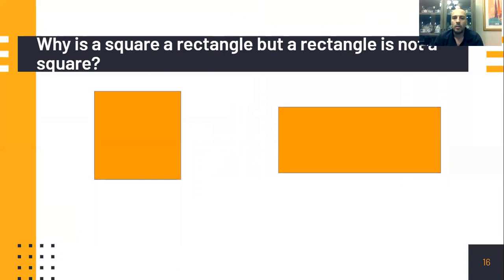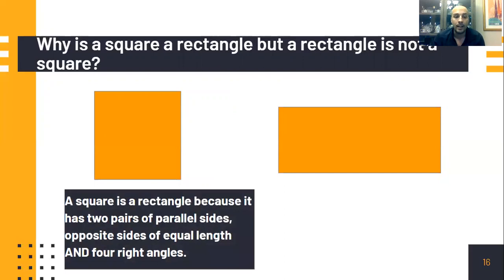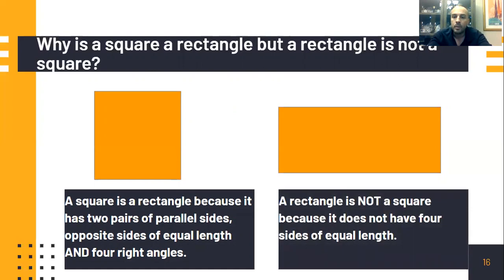Why is a square a rectangle, but a rectangle is not a square? This is a very important concept to remember. Think about the characteristics of these two shapes. A square is a rectangle because it has two pairs of parallel sides, opposite sides of equal length, and four right angles — just as a rectangle does. However, a rectangle is not a square because a rectangle does not have four sides of equal length like a square does.